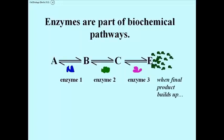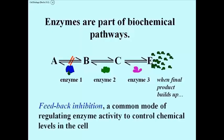As molecules of E build up, it's possible that one of them might actually go back and bind to enzyme 1, changing its shape and preventing it from acting.